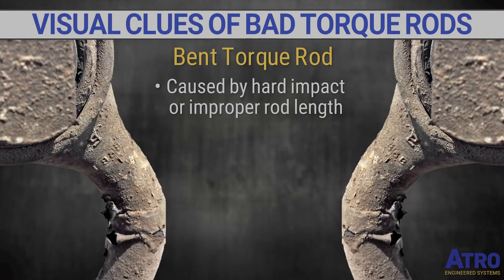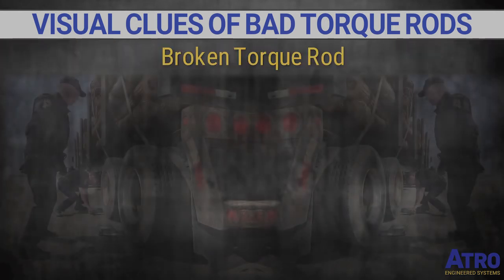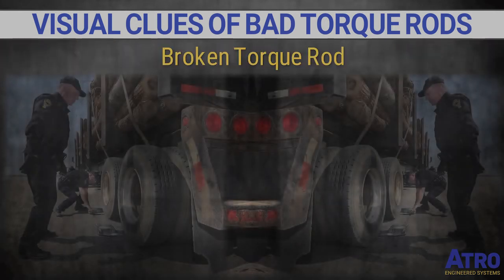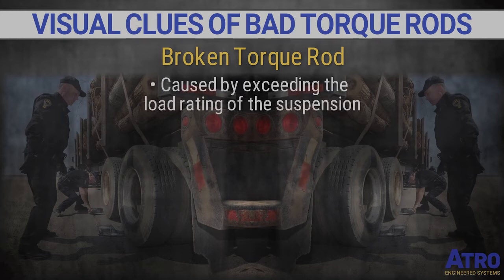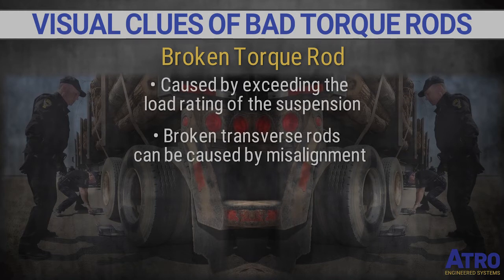Finding a bent rod usually means it suffered a hard impact or it is the improper rod length — replacement is obviously necessary. Broken torque rods, while rare, are caused by exceeding the load rating of the vehicle suspension. Broken transverse rods can also be caused by misalignment.